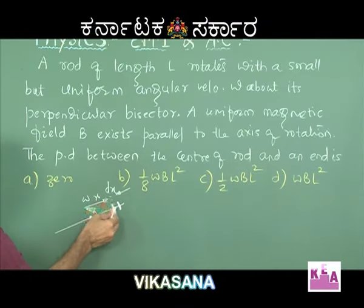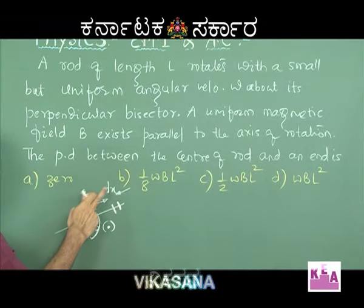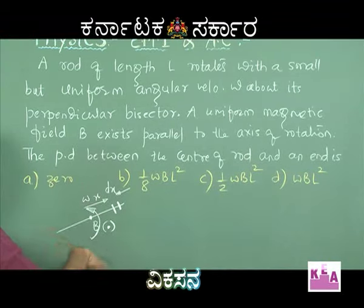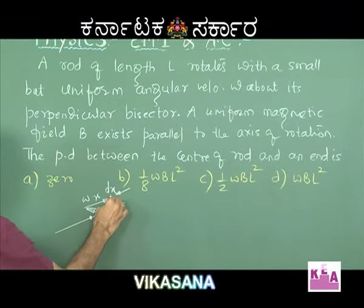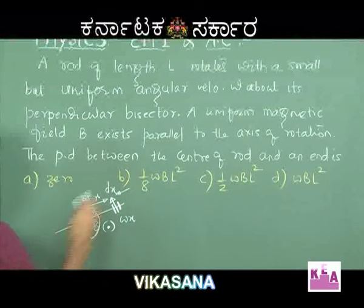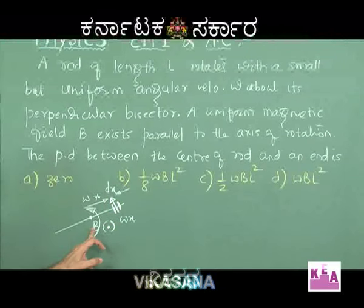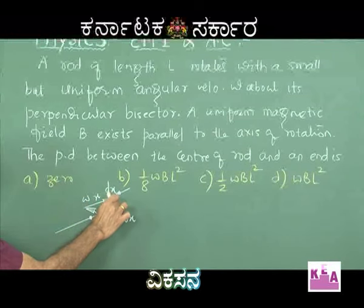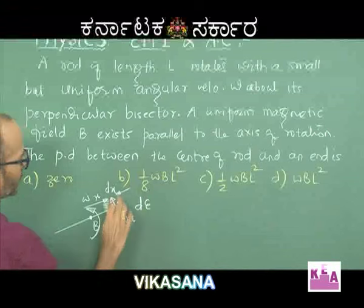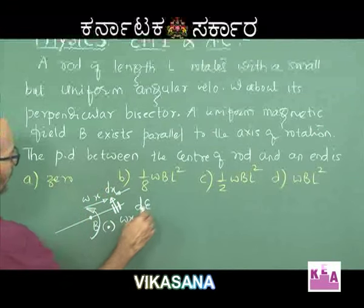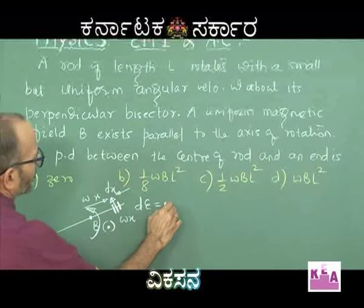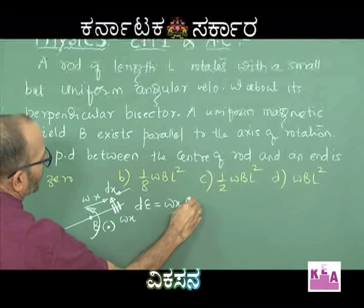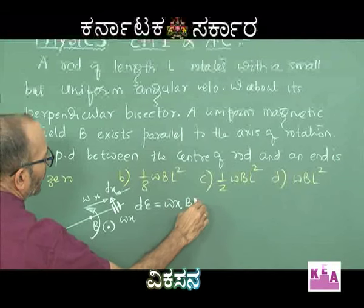What is the velocity of the element? It is directly proportional to distance, so it should be omega x, where omega is uniform and constant for the whole rod. So that velocity will be omega x. What is the EMF going to be induced in that small element? The small EMF dE induced in that element is vBl, where v is omega x, B is the magnetic field, and l is dx.